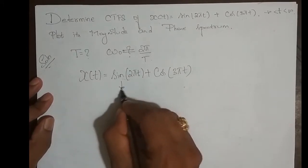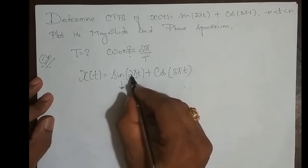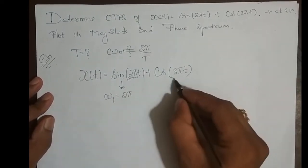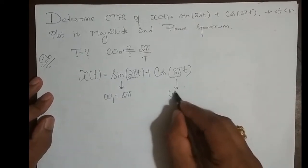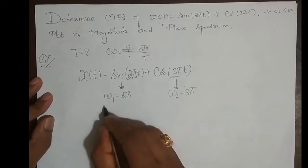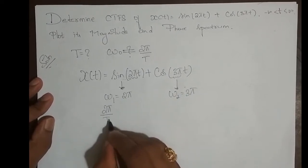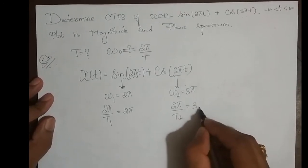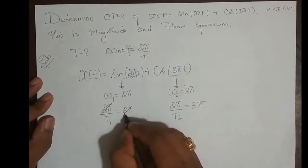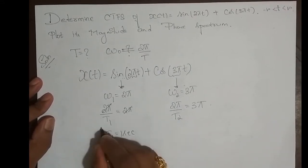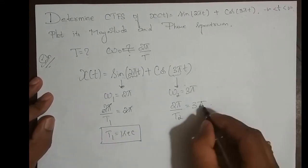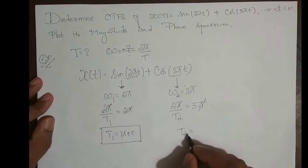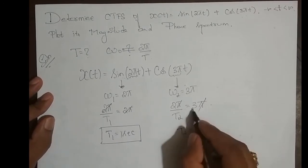To find T1, we equate the coefficient of t with ω₁: ω₁ = 2π, so 2π/T1 = 2π, giving T1 = 1 second. For the second signal, ω₂ = 3π, so 2π/T2 = 3π, giving T2 = 2/3 second.